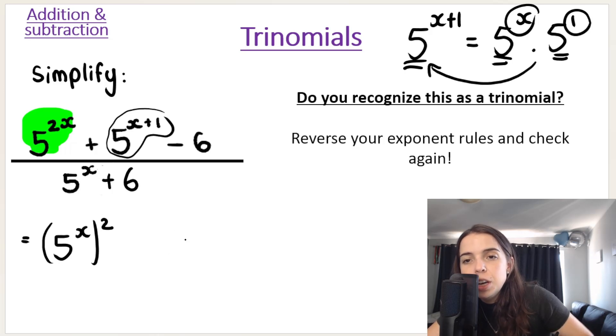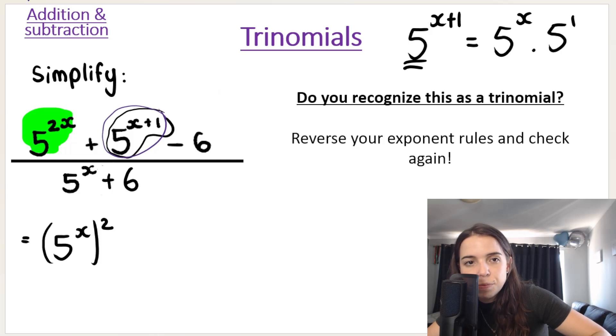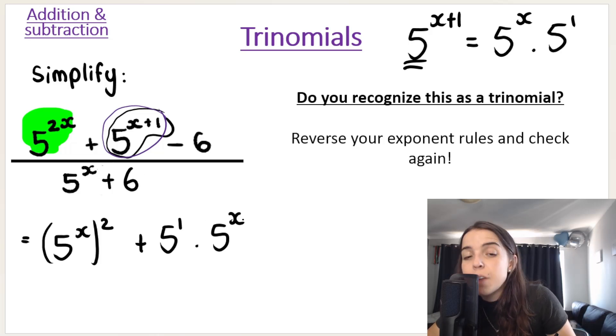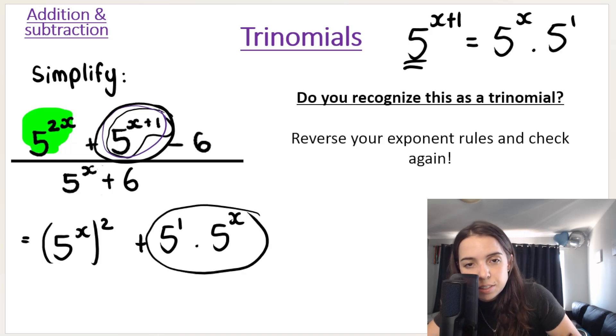This over here, as I've shown you, might be helpful to rewrite as 5 to the power of X multiplied by 5 to the power of 1. So rewriting this as this, 5 to the power of X multiplied by 5 to the power of 1. And what I'm going to do is I'm just going to write it the other way around. So 5 to the power of 1 multiplied by 5 to the power of X. Don't get confused. Don't lose me.